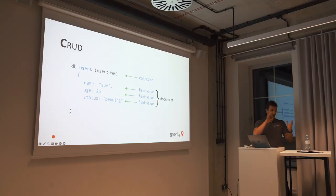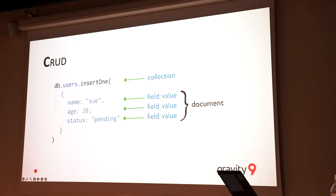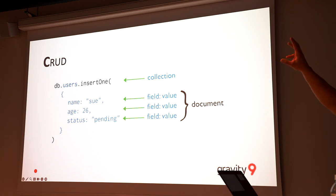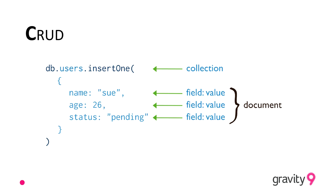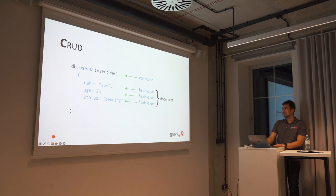Now, how to insert a document. These examples are from Mongo University, which I recommend for deeper knowledge. You have a database, a collection called users, and there is a simple command — insertOne — with a JSON document. That's it. Execute it and it ends up in the collection. The only thing MongoDB adds is an ID. Each document must have an ID; in this case it will be auto-generated, and an index on ID will also be created by default.